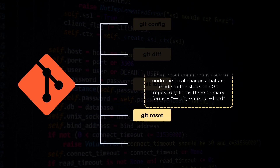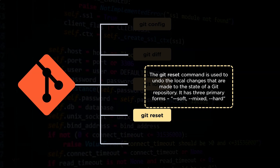The fourth command is the git reset command. The command is used to undo the local changes that are made to the state of a git repository. The command has three primary forms: soft, mixed, and hard.